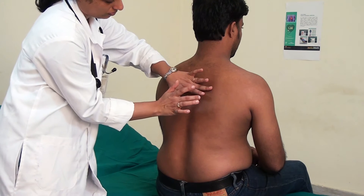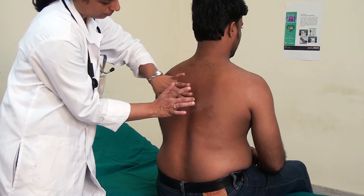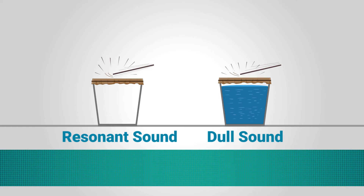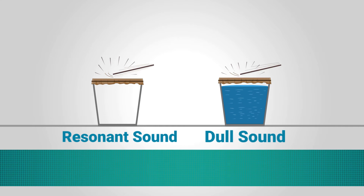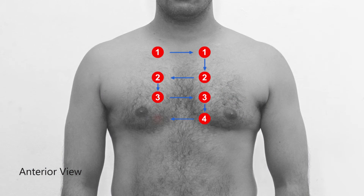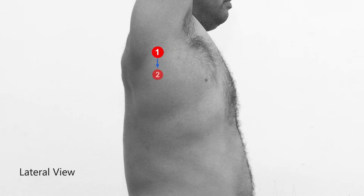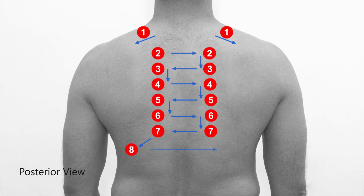There are two sounds to listen for while percussing: a resonant sound and a dull sound. Resonant sounds will be heard during percussion over the lungs until you reach the diaphragm. If you hear dullness over the lungs during percussion, this could possibly suggest the presence of a mass or consolidation.